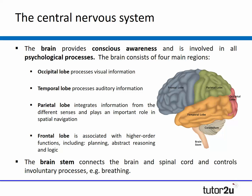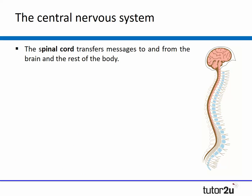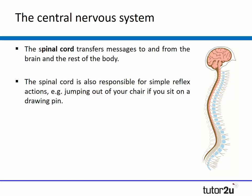You also have the brain stem, which connects the brain and the spinal cord, and it controls involuntary processes such as breathing and digestion — things we don't think about. The spinal cord, the other part of the central nervous system, transfers messages to and from the brain and the rest of the body. The spinal cord is also responsible for simple reflex actions that don't even involve the brain, such as jumping out of your chair if you sit on a drawing pin, or taking your hand away from a hot surface.